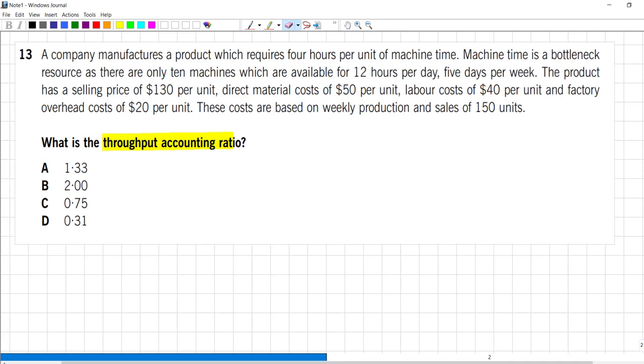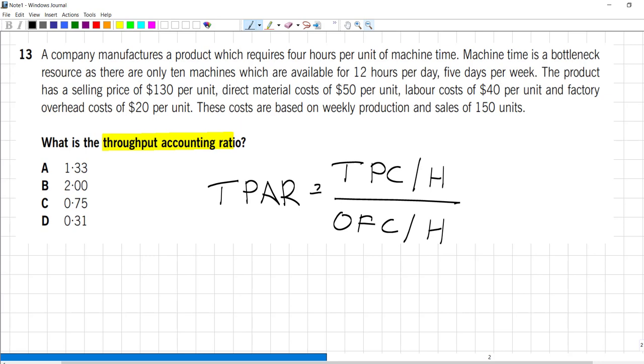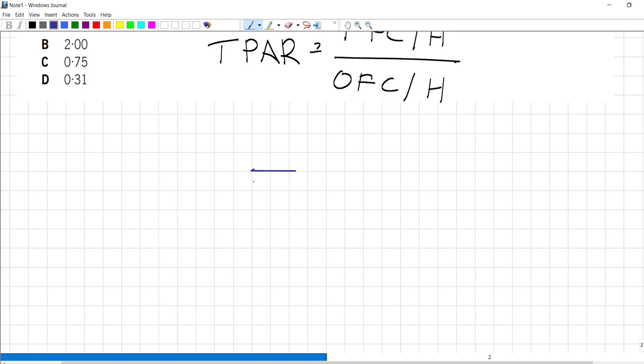What I'm going to do is remember the formula: throughput accounting ratio equals throughput contribution per hour over other factory costs per hour. So you must know that formula going into the exam. Then we can drill down into that. The throughput contribution would be the price minus the materials divided by the hours on the bottleneck. Other factory costs per hour will be the overheads plus the labor spend divided by the total hours of bottleneck resource.